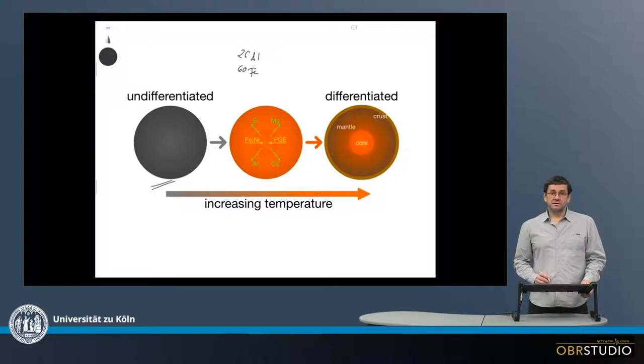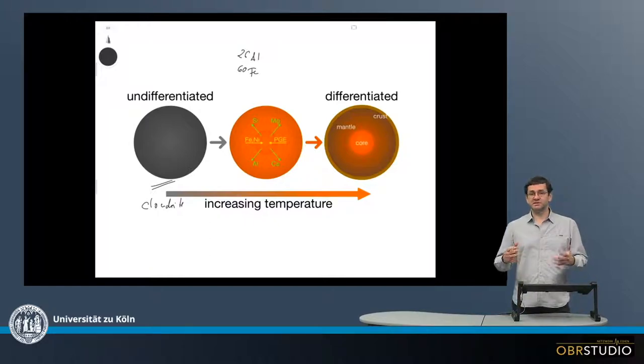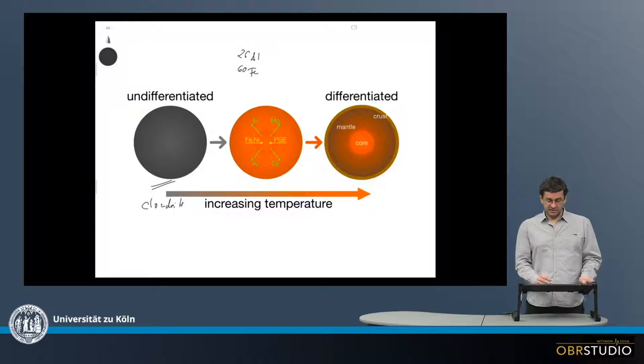And the undifferentiated planetesimals are those from which we get the chondrites, the most primitive material. These still contain all the smaller grains that formed in the protoplanetary disk. And studying these means we can study the processes in the protoplanetary disk.